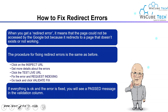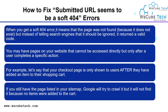How to fix redirect error: A redirect error means that the page could not be accessed by Googlebot because it redirects to a page that does not exist. The procedure for fixing your redirect error is: click on inspect URL, get more detail about the error, click on test live URL, fix the error, request indexing, and then click on validate. If everything is okay and the error is fixed, you will see a success message in the validation column.